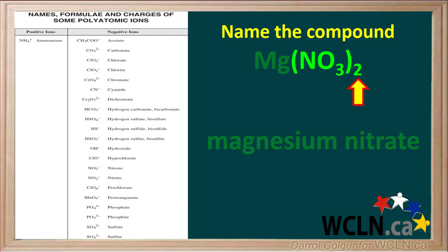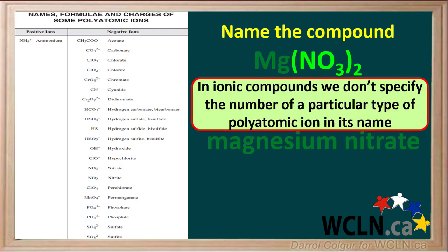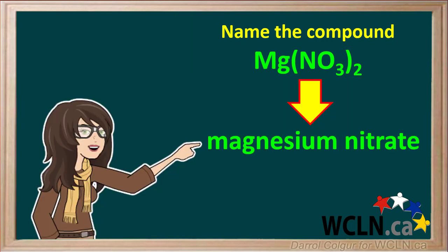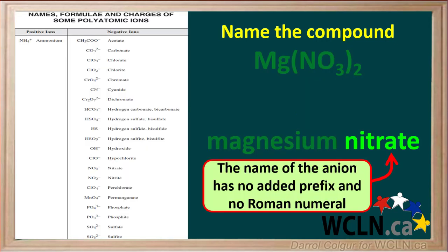You may be wondering if we need to say anything to indicate there are two nitrate ions. Unlike covalent compounds where we use prefixes, in ionic compounds we don't need to specify the number of a particular type of polyatomic ion in the name. We assume a given formula has the correct ratio of anions to cations to make the charges add up to zero. Therefore, the final name of this compound is just magnesium nitrate. The name of a polyatomic ion in an ionic compound formula has no added prefix and no Roman numeral — it is just the name that appears on the polyatomic ion table.